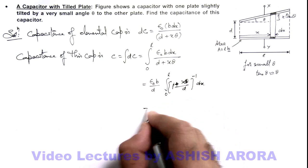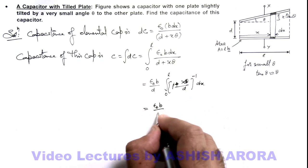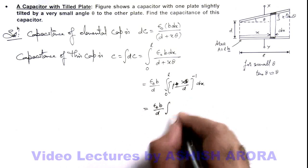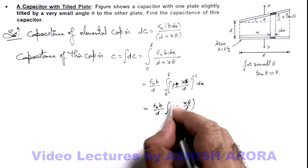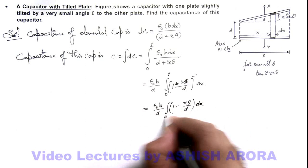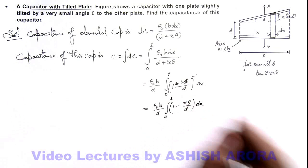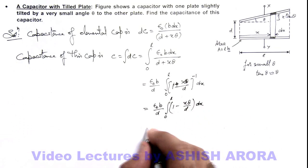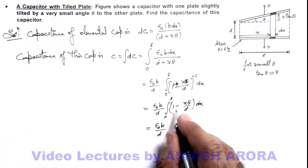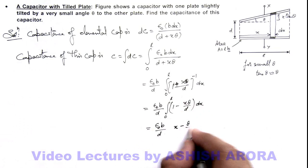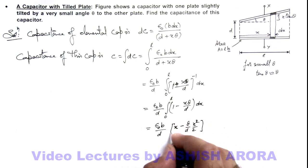So this can be further written as epsilon not b by d, integration of 1 minus x theta by d, multiplied by dx, limits from zero to l. We apply limits from zero to l, so this will be epsilon not b by d, multiplied by l minus l square theta by 2d, which after simplification...